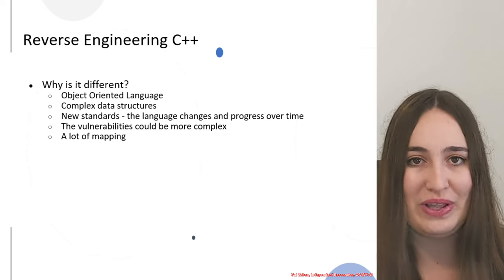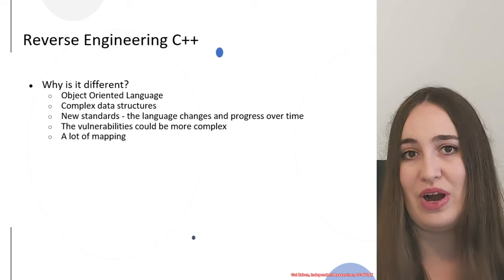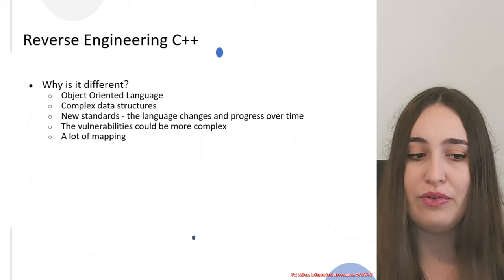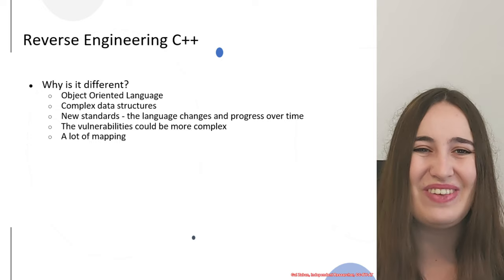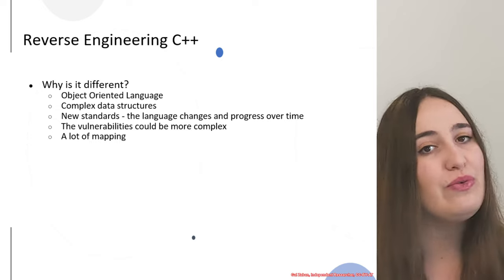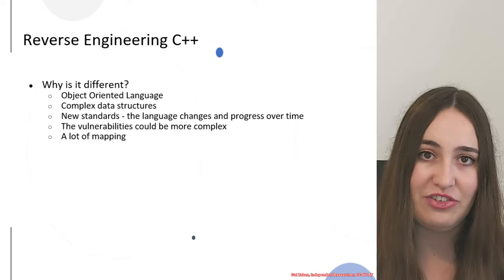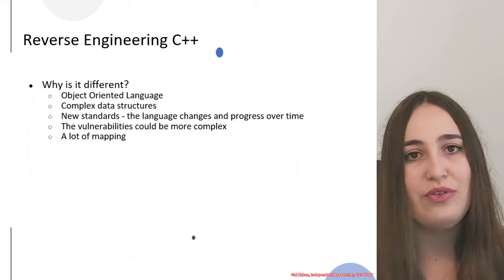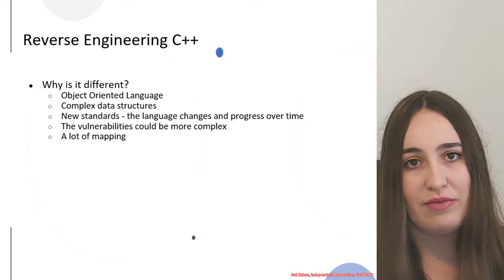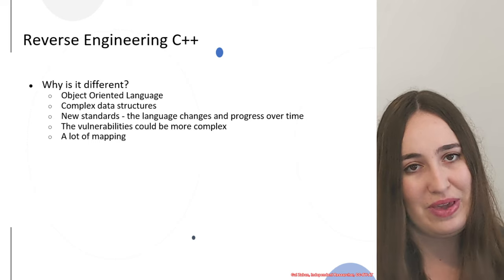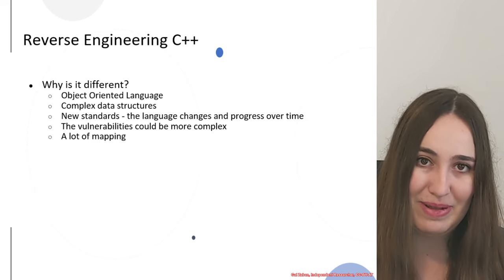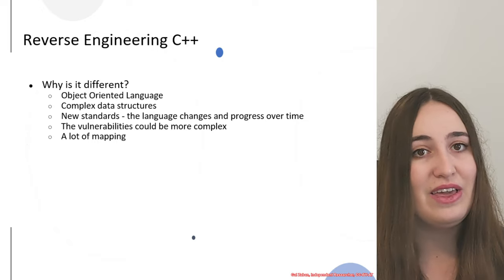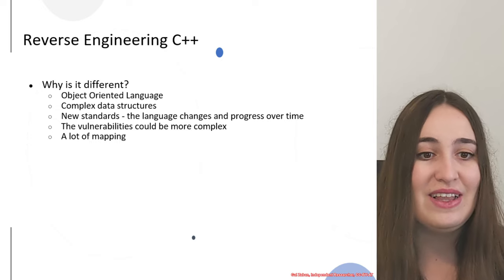The last and most important point is that C++ reversing requires a lot of mapping. To reverse engineer a C++ binary you need to define a lot of things and understand many objects and their relationships in order to do a better job. Keep that in mind as you will see it a lot during this class. Thank you very much for taking the time to do this course — I hope you will both enjoy it and learn from it.